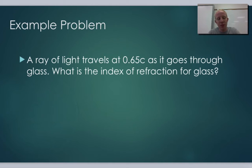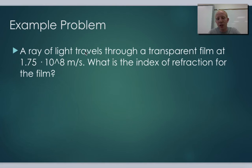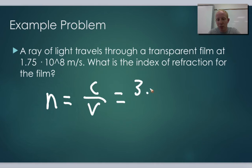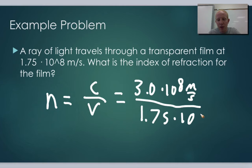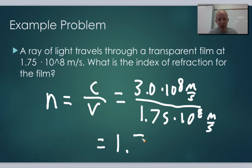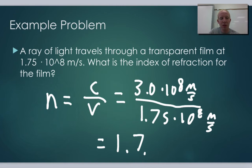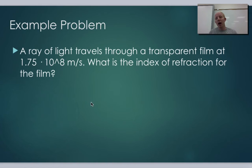Sometimes the problem gives the speed in meters per second instead of in terms of c. For example, if light travels at 1.75 × 10⁸ m/s through a film, then N = (3.0 × 10⁸ m/s) / (1.75 × 10⁸ m/s), which gives an index of refraction of 1.7 — a really high value, slowing down light quite a bit.